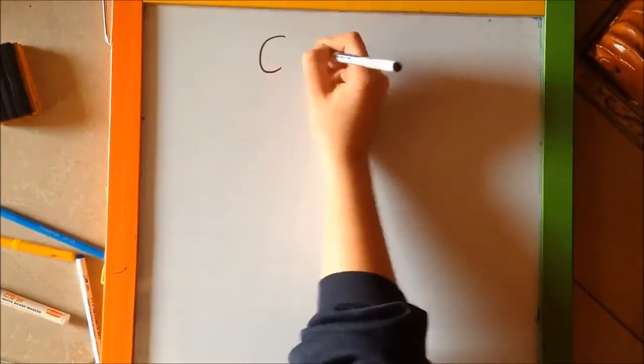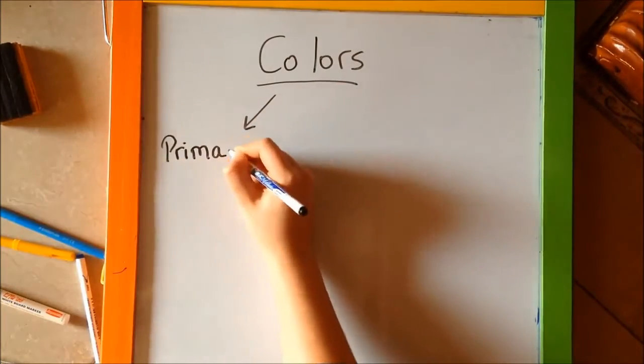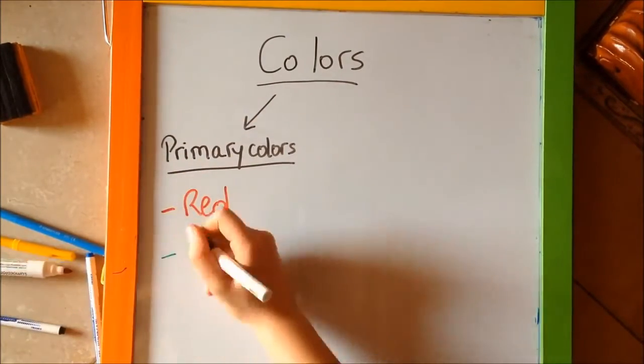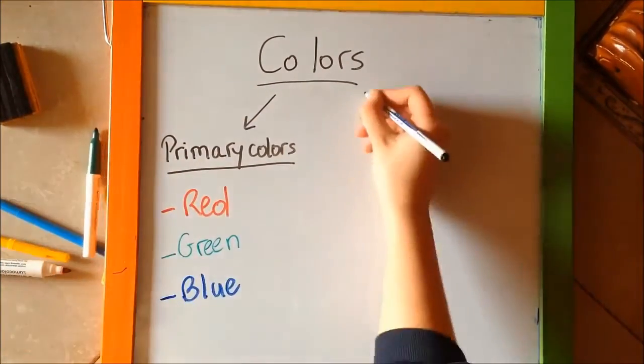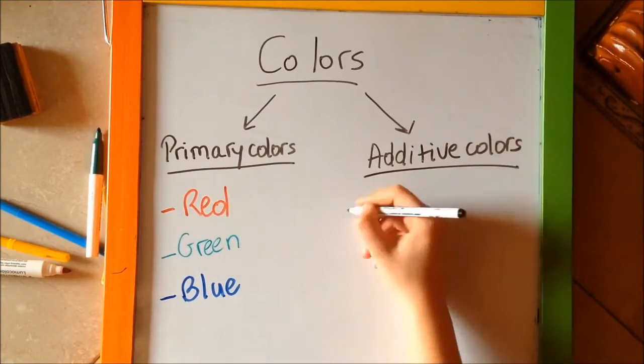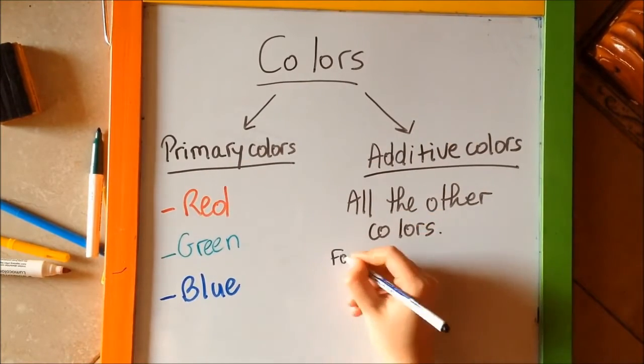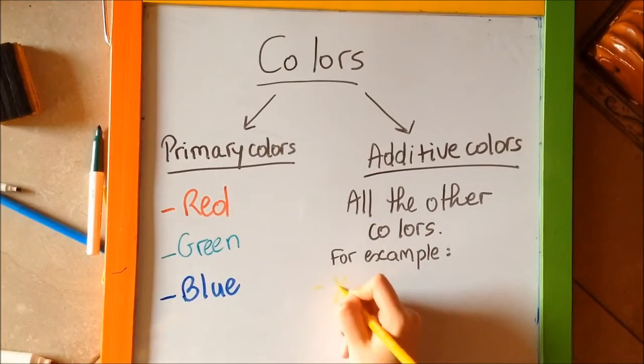You might ask yourself, how do we see colors apart from red, green, and blue? Well, I got the answer. We classify colors into two types: primary colors, which are red, green, and blue, and additive colors, which are all the other colors.